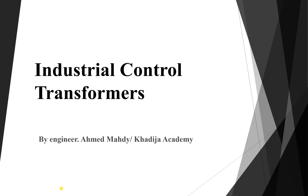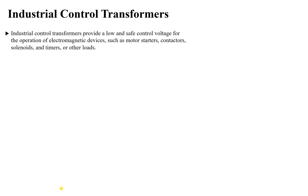Let's talk about another type of transformer called the industrial control transformer, or in another way they are called motor control transformers. These transformers are used in control circuits of motors — for example, they are used to step down the voltage into a low and safe voltage for the operation of electromagnetic devices like motor starters, PLCs, contactors, relays, timers, and so on. They are used in motor control circuits, which use low voltages like 48V, 12V, or 110V, depending on the device.